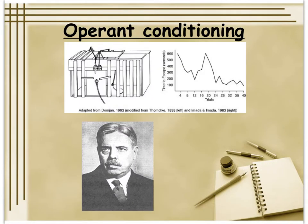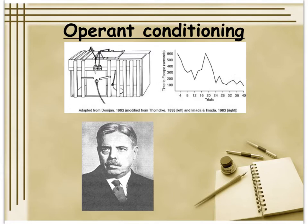Here is a picture of Thorndike. With the puzzle box and the cat trying to figure out a way out, notice something Watson also uncovered: as you increase the number of trials, the time it takes the cat to escape is less. But notice that relationship is not linear — the trend is to get better or do it in less time, but it's not a linear trend. That's the same thing Watson uncovered when testing animals in mazes.